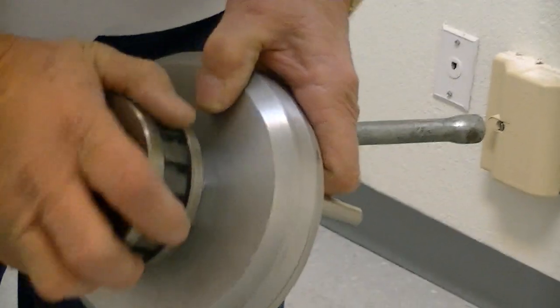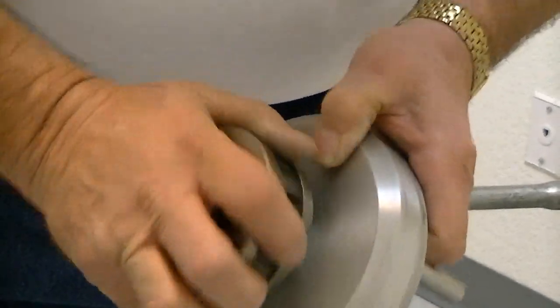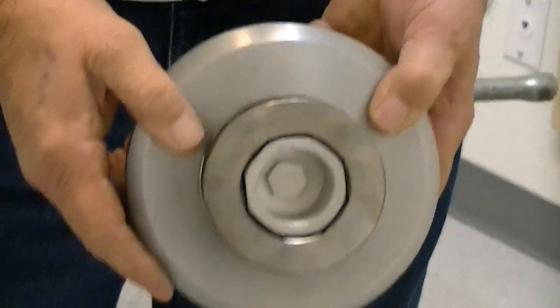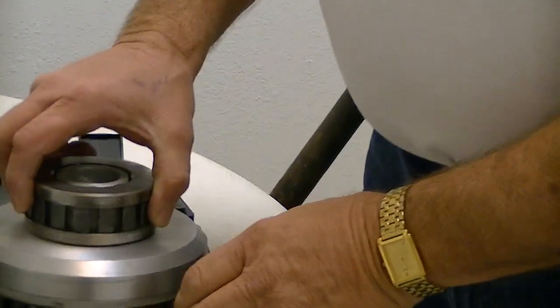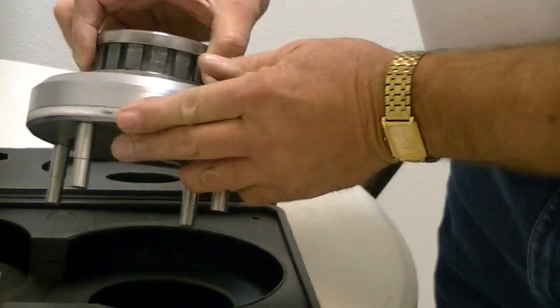Again, the snap ring's in there. It's in there good. Slides on there just like that. All of that comes in this kit.